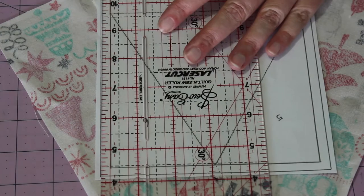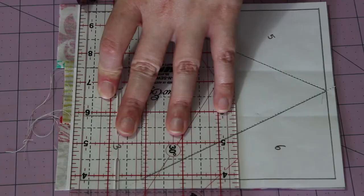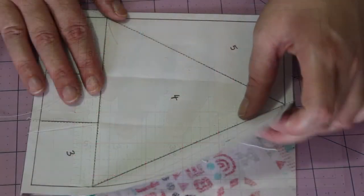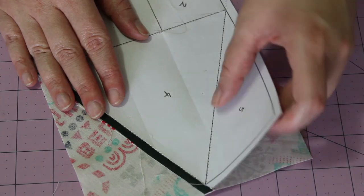Now flip the pattern back over again and with a ruler and blade, trim off the excess fabric along the outside of the quarter inch seam allowance line. Then with confidence, gently rip away the paper from the back of the pieced block, one section at a time.